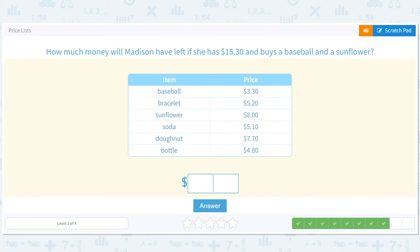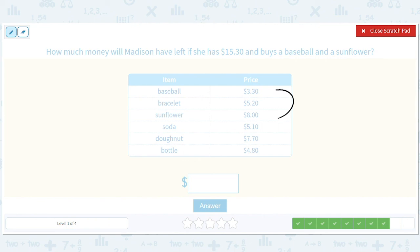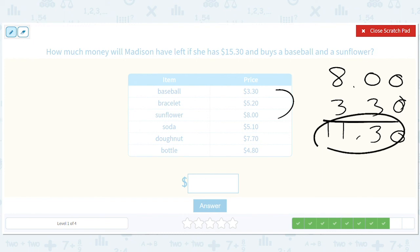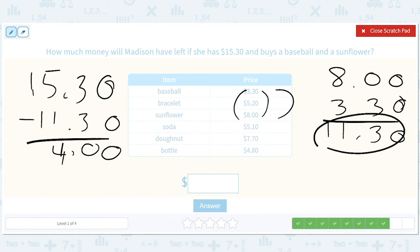How much money will Madison have left if she has fifteen dollars and thirty cents and buys a baseball and a sunflower? Putting these two together we should have eleven ten, eleven thirty - we'll check. Eight dollars, three dollars, baseball and a sunflower. Zero, three, eleven. So eleven thirty for the baseball and the sunflower. Again, eight plus three is eleven, thirty plus zero is thirty, so eleven thirty. And she has fifteen thirty, so shave off the thirties - it's fifteen, eleven, it's four bucks. But let's write it down: 15.30 minus 11.30. Zero, zero, zero, four, four. Four bucks - that's how much Madison has left over.